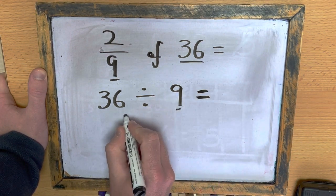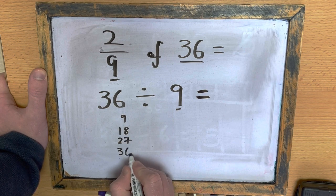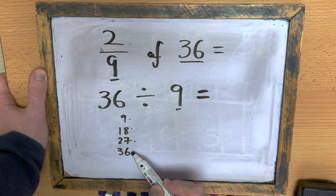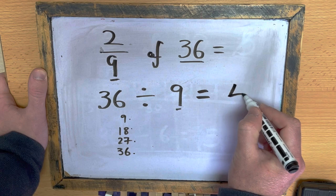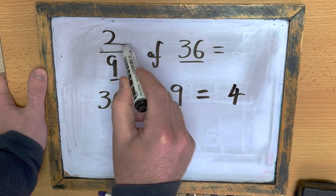So, 36 divided by 9. I'm going to do my 9 times table, just to make sure here. So, 36 divided by 9 is 1, 2, 3, 4.